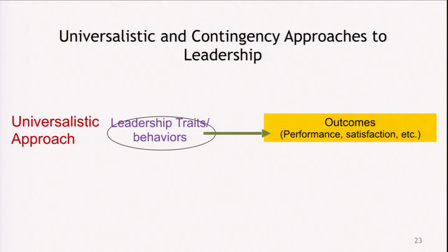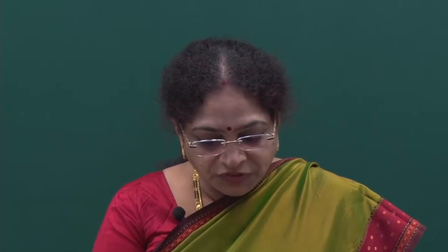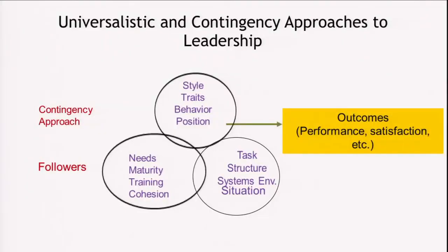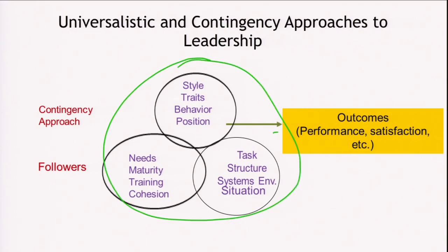Comparing universalist theories with contingency approaches: the universalist approach focuses on leadership traits and behaviors and their outcomes in terms of performance and satisfaction. The contingency approach additionally considers follower characteristics — their needs, maturity, training, and cohesion — along with task structure covering the systems, environment, and situation. These three elements together determine outcomes in terms of performance and satisfaction.